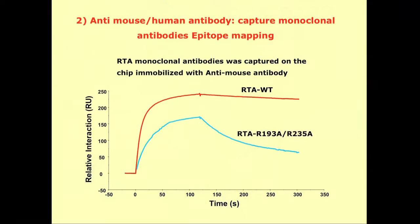Another application used antibody capture for epitope mapping. We have an RTA monoclonal antibody and captured it using an anti-mouse antibody chip. When we flowed wild-type RTA over the surface, we saw a nice response curve with very slow dissociation — the red curve. With an RTA mutant at the epitope location, we observed very fast dissociation instead. This is another example of using Biacore to map the epitope of an antibody by comparing wild-type and mutant protein responses.